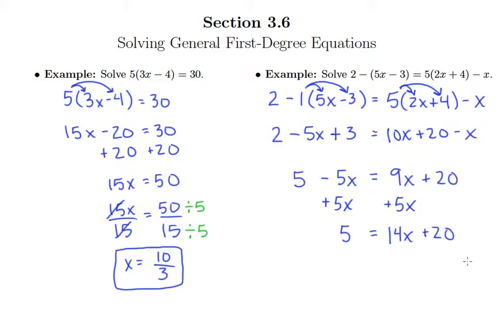Left with a 5 over here, and then we can subtract 20 from both sides to get the constant on the other side. This is negative 15 equals 14x.